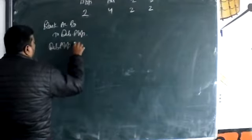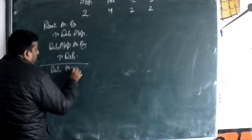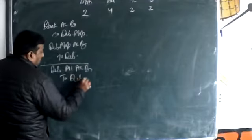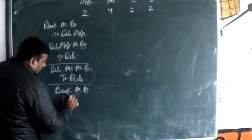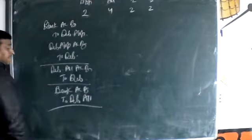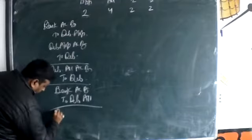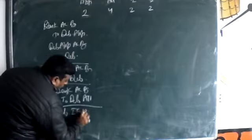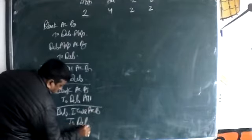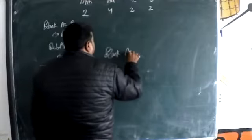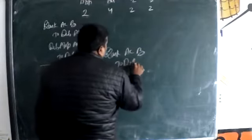Then debenture application account debit to debenture. Now allotment: debenture allotment account debit to debenture. And then money received — bank account debit to debenture. Next, debenture first call account debit to debenture first call.